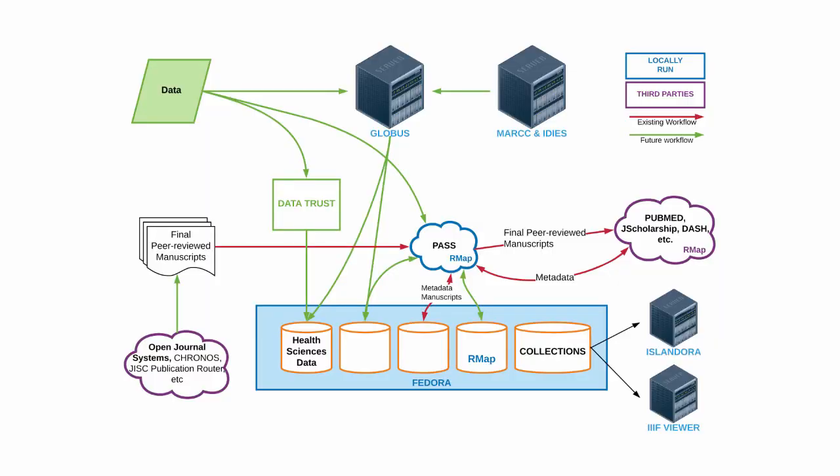I wanted to show this diagram — if you think about the PASS architecture diagram collapsed into the little cloud in the middle, this is a PASS-centric view of Hopkins. We're really thinking of PASS as being embedded in a series of broader research workflows within the institution around data and publications. We've been mapping how articles and data flow between all these different kinds of systems — including MARCC, the Maryland Advanced Research Computing Center, which is the centrally managed high performance computing facility at Hopkins. We're looking at where researchers' data and articles are sitting, how they're flowing, how they come through PASS, and end up in our archives and repositories, and then external ones like PubMed Central.